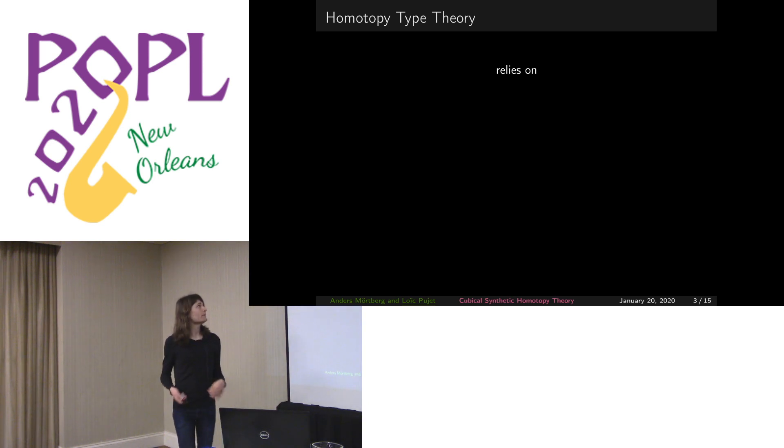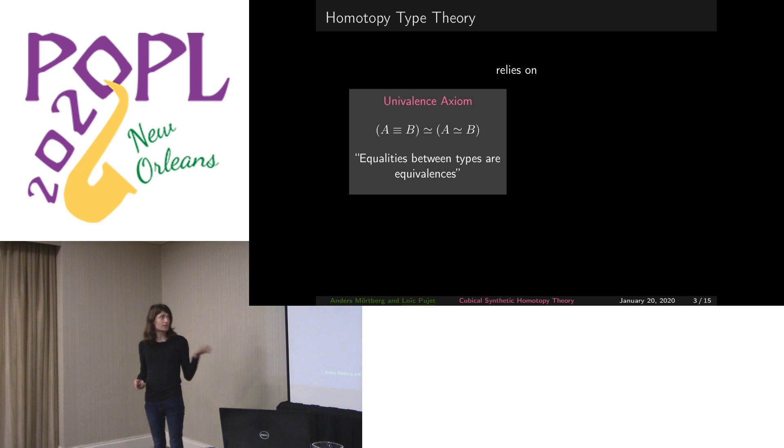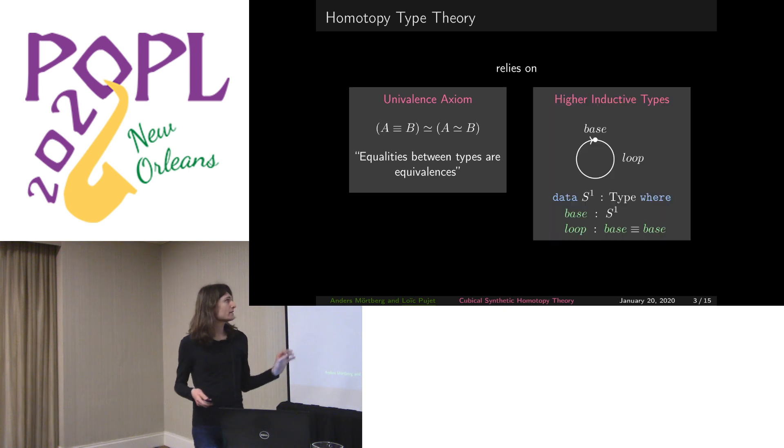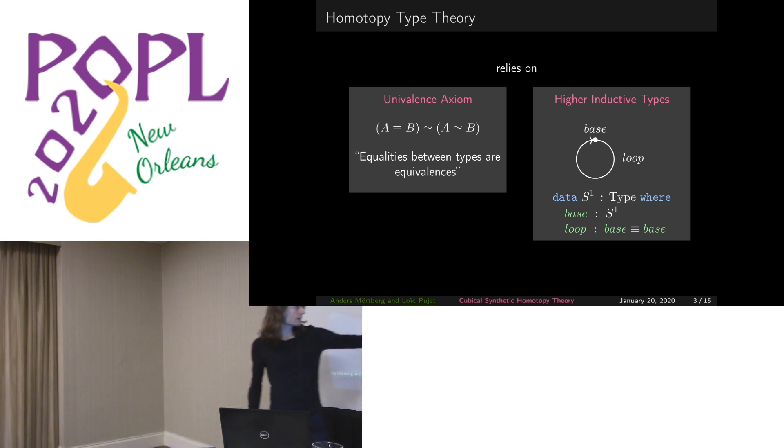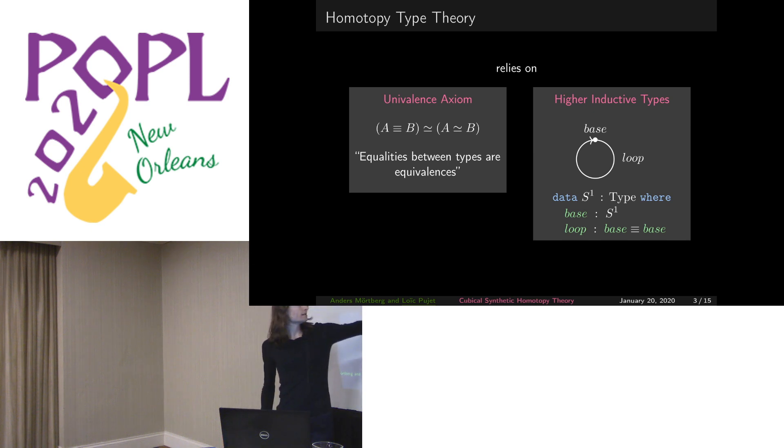This homotopy type theory interpretation relies on two things. The first one being the univalence axiom, which tells us that equality between types are equivalences. And higher inductive types, that are some kind of variants of inductive types that allow us to also add constructors for propositional equalities. Here, the higher inductive type is some kind of circle with a base point and a propositional equality between that point and itself. Since propositional equalities are paths, that means there is a loop.